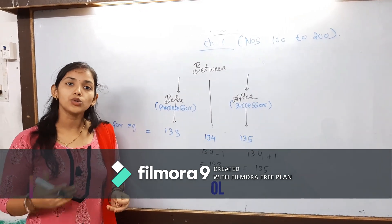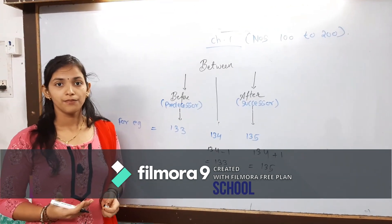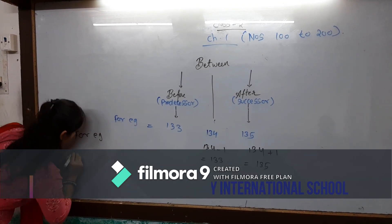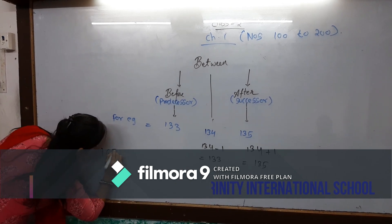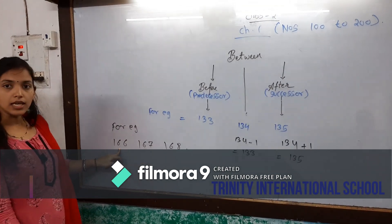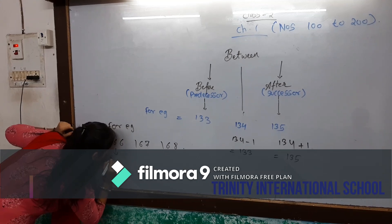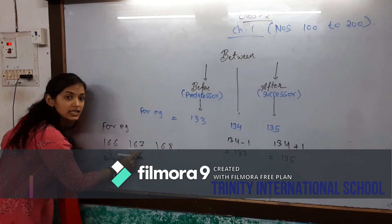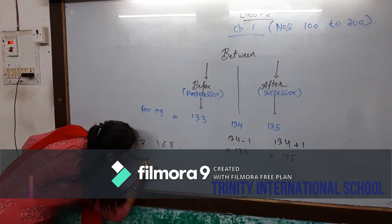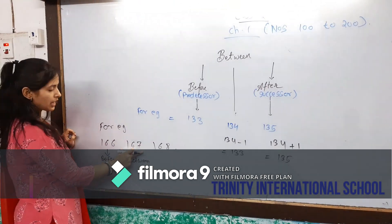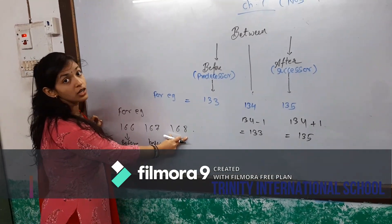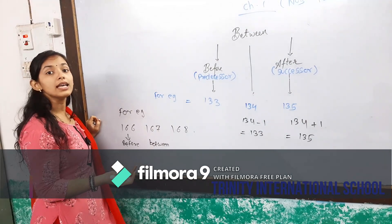Can I take another example to understand you better? For example, 166, 167 and 168. These are my numbers. 166 is my before — before means predecessor. And 167 is your between. And 168 is your successor.